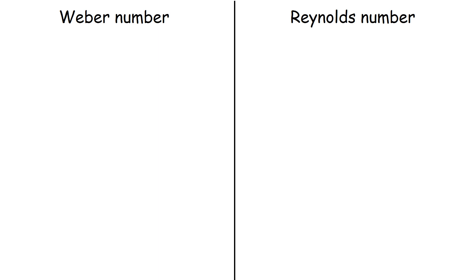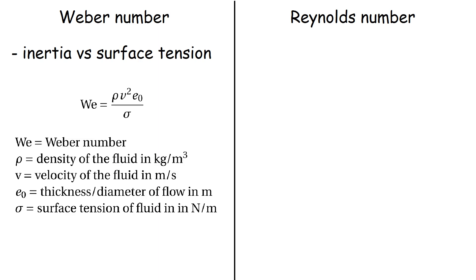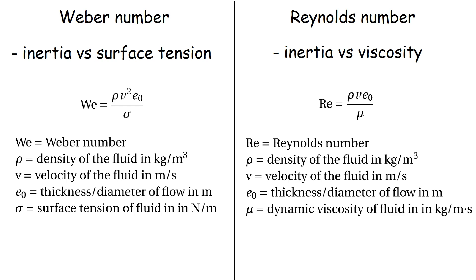To make a quantifiable distinction between these two regimes, physicists make use of the Weber and Reynolds numbers. The Weber number is a dimensionless number which gives a measure between the fluid's inertia and its surface tension, while Reynolds number is also a dimensionless number which gives a measure between the fluid's inertia and its viscosity.